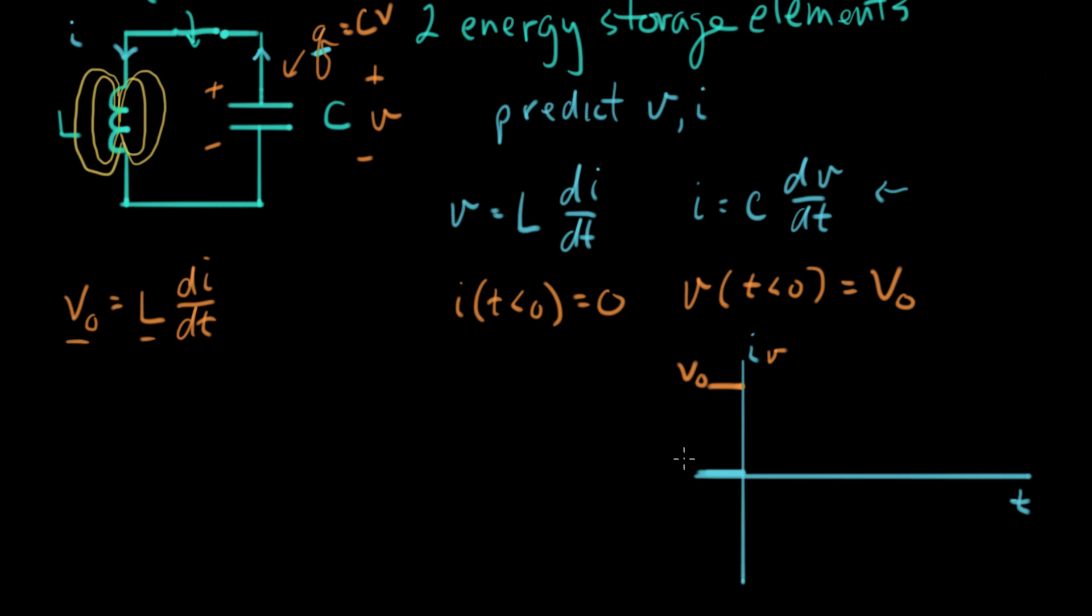And now we're going to sketch in what we think happens right after the switch closes. So we decided that there was going to be some kind of a di/dt. Di/dt equals V-naught over L. So there's going to be some rising slope. There's going to be some positive slope on the current. All right, so we took our first step. Now, the other thing that's happening here is that Q, what is Q doing? Let's track our charge.